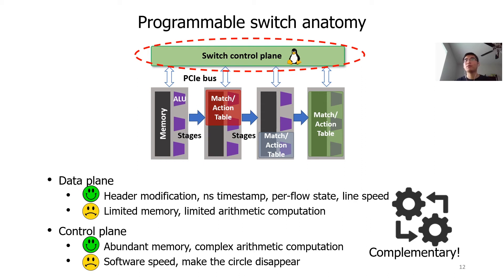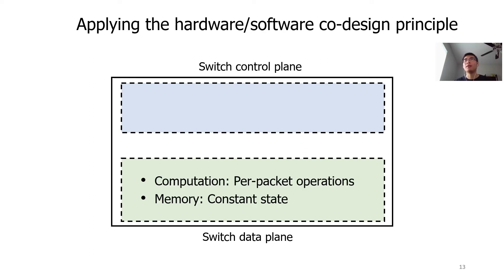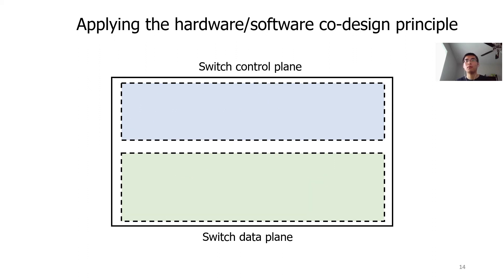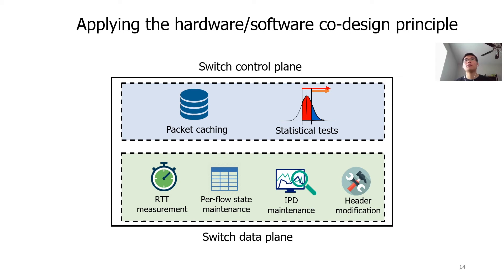In Netwarden, we use hardware-software co-design to build an efficient defense. Per-packet operations and constant state maintenance should run in the data plane. Batch operations and growing state maintenance should run in the control plane. Because the bandwidth between the data plane and control plane is not infinite, we should also minimize the crosstalk. According to our co-design principle, we implement RTT measurement, per-flow state maintenance, IPD maintenance, and header modification in the data plane. We deploy packet batching and statistical tests in the control plane.